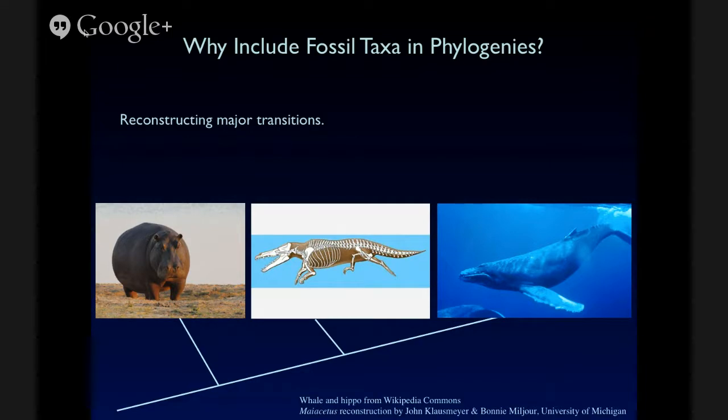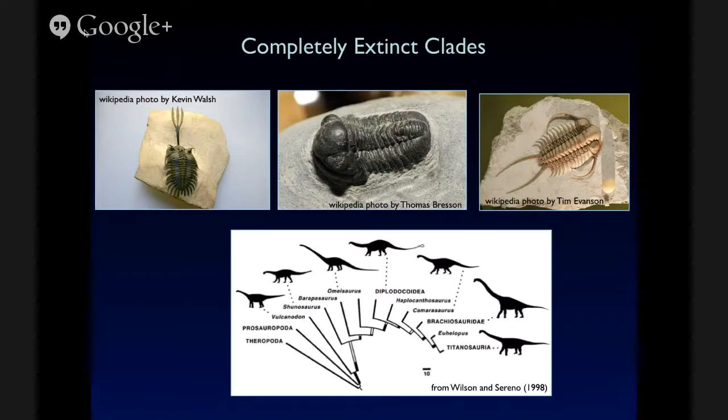And I don't mean to imply that we are only interested in fossils to learn more about living organisms. There's many very important and fascinating and completely extinct clades that we would like to have phylogenies of so we can understand their evolutionary history better. So groups like trilobites, sauropod dinosaurs, the largest land animals that have ever lived, certainly we are still interested in the phylogeny of groups that are now no longer with us.